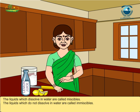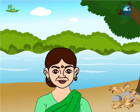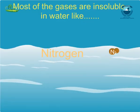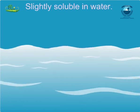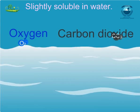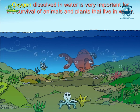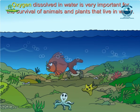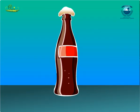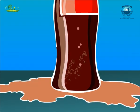Do gases also dissolve in water? Most of the gases are insoluble in water, like nitrogen, hydrogen and carbon monoxide. But gases like oxygen and carbon dioxide are slightly soluble in water. Oxygen dissolved in water is very important for the survival of animals and plants that live in water. My fish also have gas in it. Yes, those bubbles are of gases only.